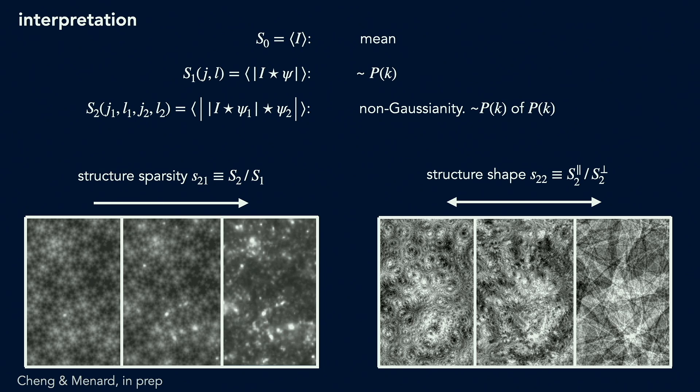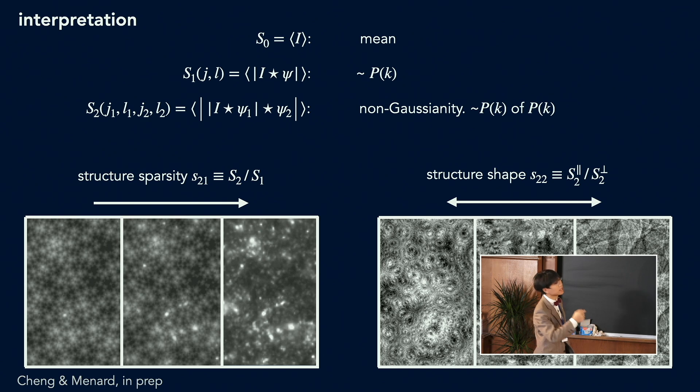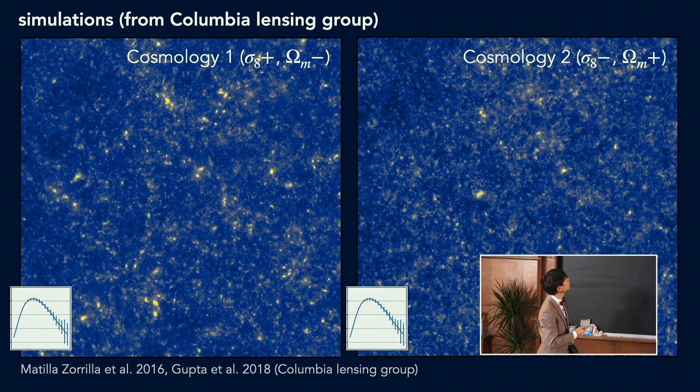And when it's large, then the features are sparsely distributed in the field. And that's really the essence of non-gaussianity, right? And if we take the ratio between second order coefficients with the configuration of parallel wavelengths versus perpendicular wavelengths, then it corresponds to some texture like the bubble-like textures versus filamentary textures. I think these are very interesting visualizations and interpretations of how these convolution layers are working.